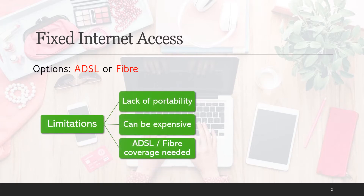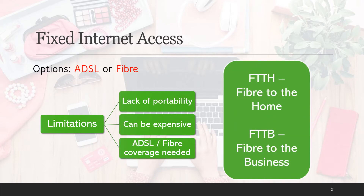Let's talk about fixed internet access. Your options are ADSL or fiber. Although ADSL is mostly going out of service and fiber is taking over, the limitations of fixed internet are a lack of portability, it can be expensive, and you need the coverage. Fiber to the home is FTTH and fiber to the business is FTTB.